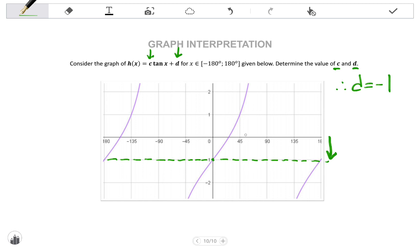So then we see that for the c value, which is our normal a value, it's the distance between the graph and the midline at 45 degrees. And we see that the distance there is 1, 2 units. So that should be the c value is 2. So d equals 1 and c equals 2.